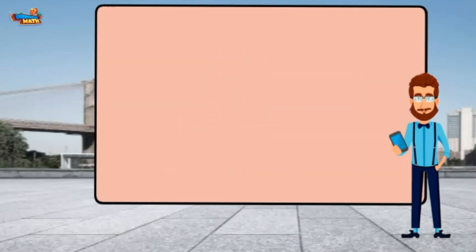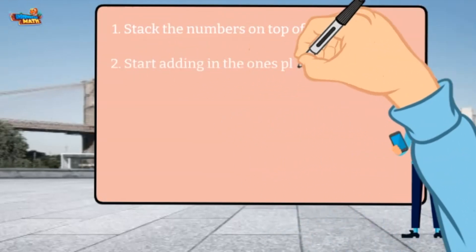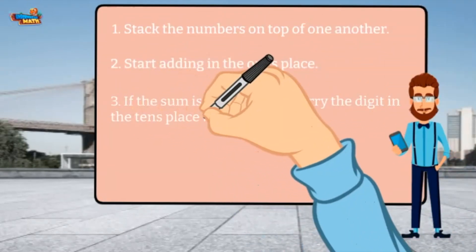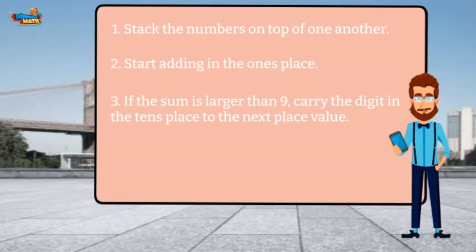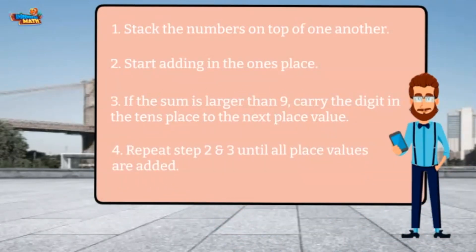When adding multi-digit numbers, stack them on top of each other. Start adding in the 1's place. If the sum is larger than 9, the digit in the 1's place stays under the line, and the digit in the 10's place is carried over to the next place value. Keep following the steps until you have added all the place value columns.